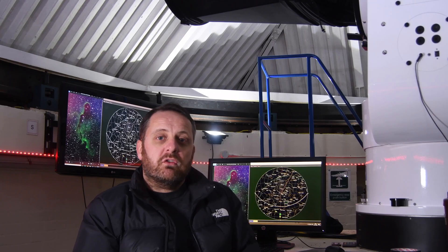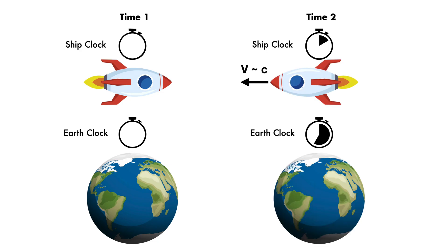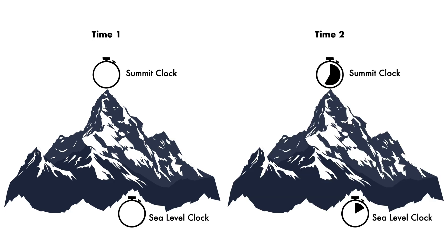So in short, a clock observed on a fast-moving object like a rocket will appear to run more slowly than one at rest relative to the observer. Likewise, a clock observed deeper in a gravitational potential well, closer to the centre of the Earth for example, will also appear to run more slowly than a clock further from the gravitational potential, sat on the top of a high mountain for example.